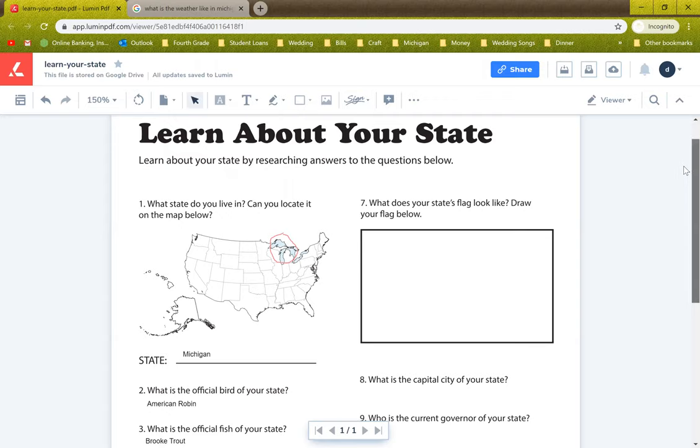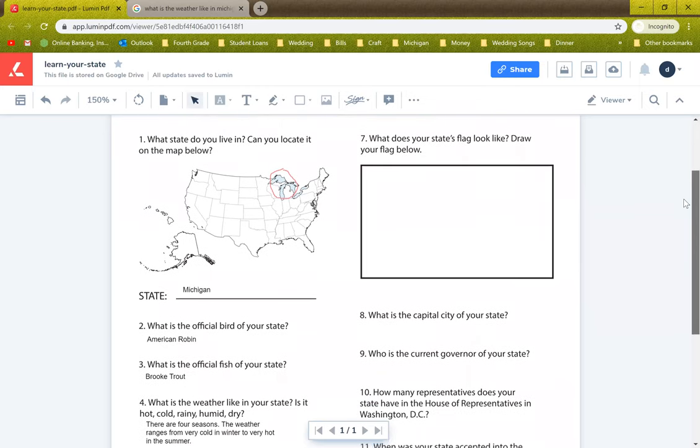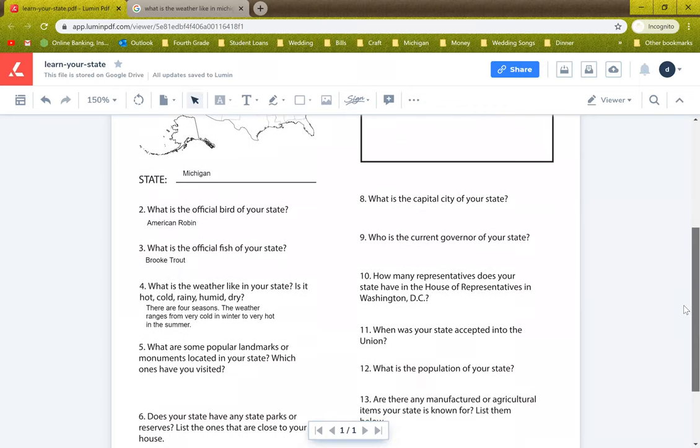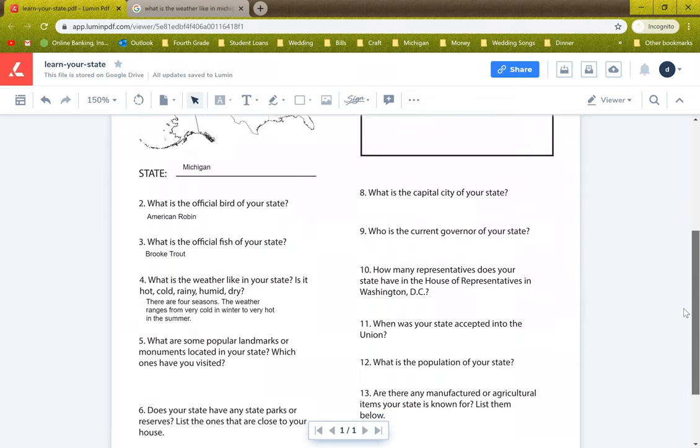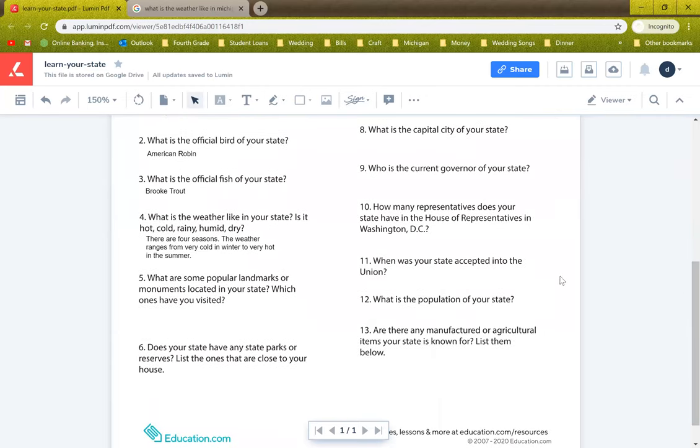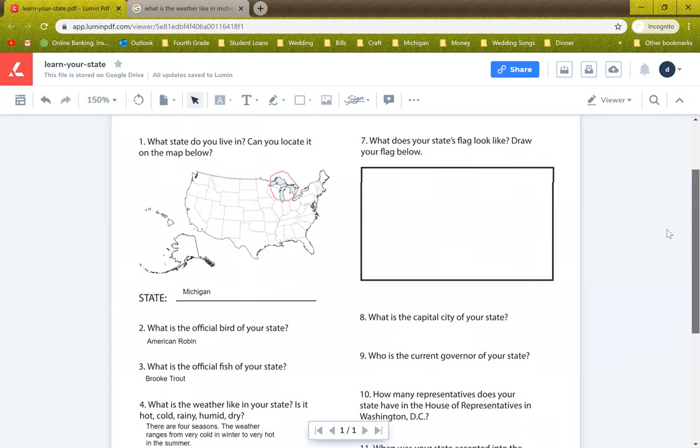So what I started to do is the first question says what state do you live in? Can you locate it on the map below? So I circled Michigan on the map below and then I wrote the state that I'm researching. Then it comes up with a ton of different questions. What is the official bird for your state? What is the weather like in your state? What is the population of your state? Who is the current governor of your state? A ton of questions.